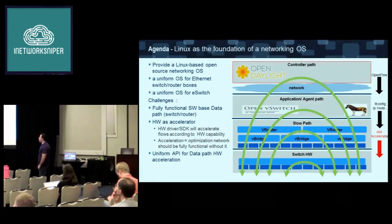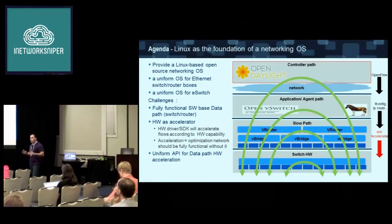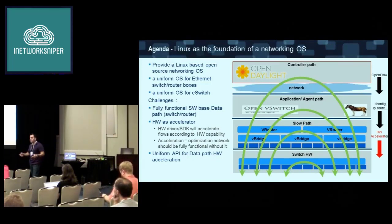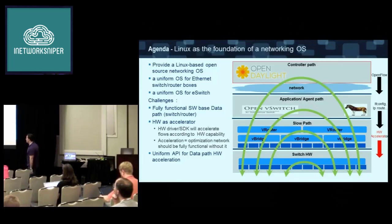We are looking for a uniform way to model the networking part of the OS. The first open issue is that currently, if we look at a current switch system, most of the time the software path is not fully capable of forwarding traffic because the Layer 2 switch, for example, is not there. So you have hardware that is fully capable of forwarding traffic, and software that knows how to handle a protocol or some kind of exception, but not all of it. This is the first challenge we are facing.